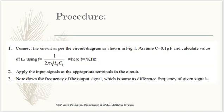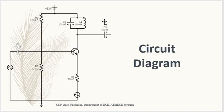The procedure for this experiment is as follows: first, connect the circuit as shown in the circuit diagram, assuming a capacitor value of 0.1 microfarad. Then calculate the value of the inductor using the equation f = 1 / (2π√(L1·C1)), where the frequency is assumed to be 7 kilohertz. Since we know C1 is 0.1 microfarad and the frequency is 7 kilohertz, we can determine the value L1 and use that calculated value in the circuit.